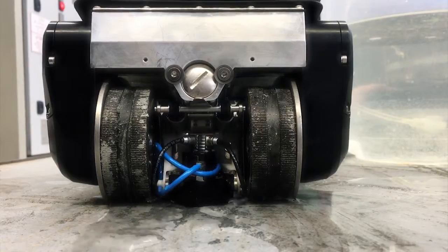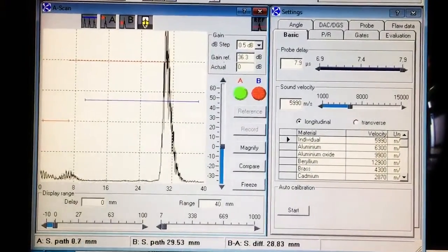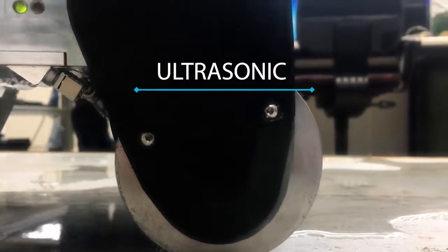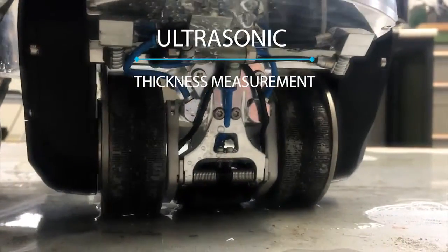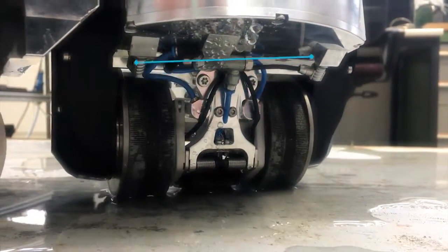The module is actuated remotely by a couplant pump that lowers the probe onto the surface. Additionally, the water is routed to the probe head and acts as couplant for the ultrasonic transmission.